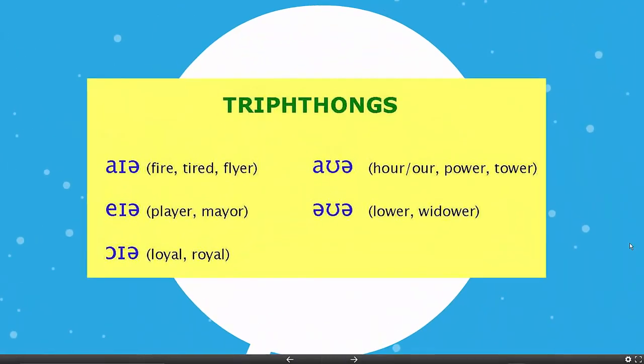aɪə as in fire, tired, flyer. eɪə as in player or mayor. ɔɪə as in loyal, royal. aʊə as in hour, power, or tower. And əʊə as in lower and widower. As you can see here, the schwa is not bigger than the other symbols.